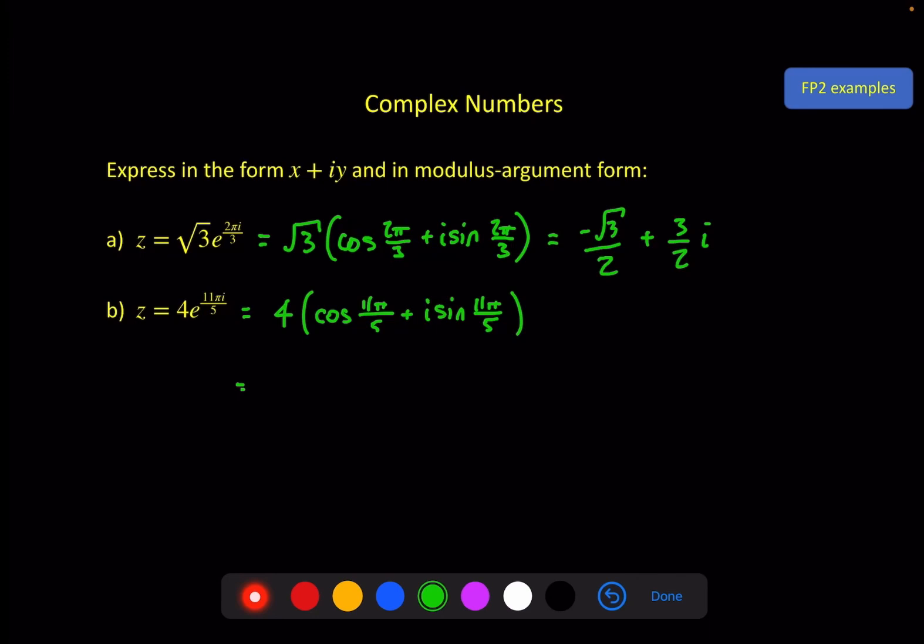And this theta is not between minus π and π so just beware of that and whether or not you need it to be the principal argument. Here I will make it the principal argument. We've got 4 for the modulus cosine 11π over 5 plus i sine 11π over 5. And then to change that into the principal argument just subtract 2π until it's in your range or you add 2π until it's in your range.